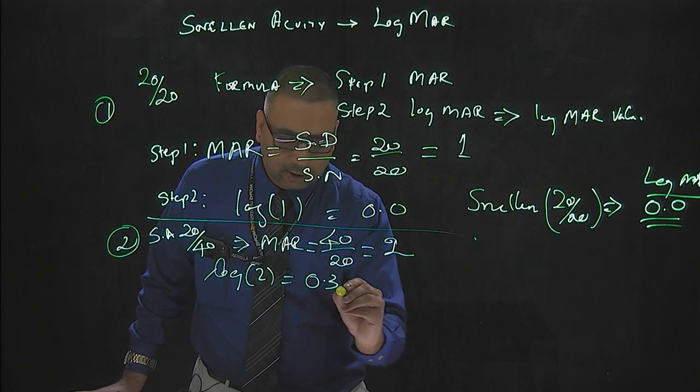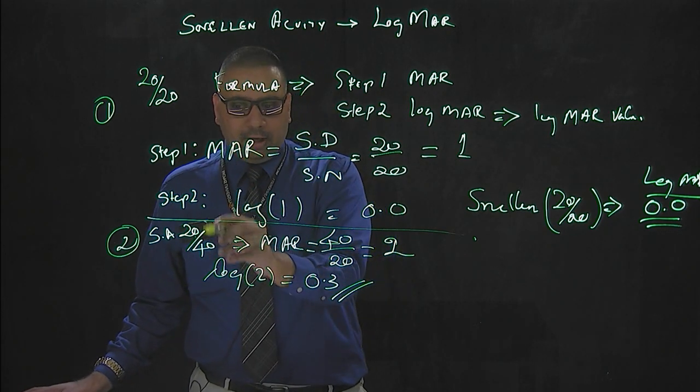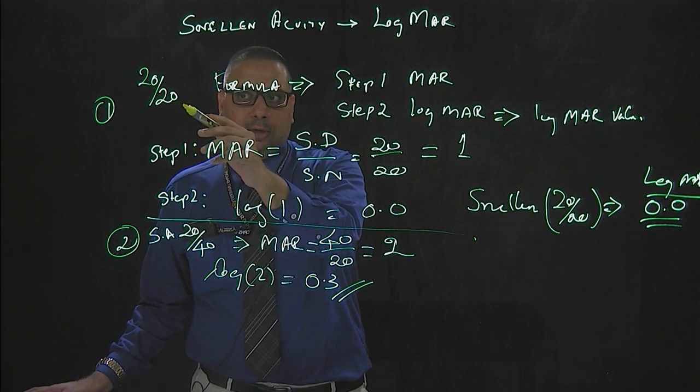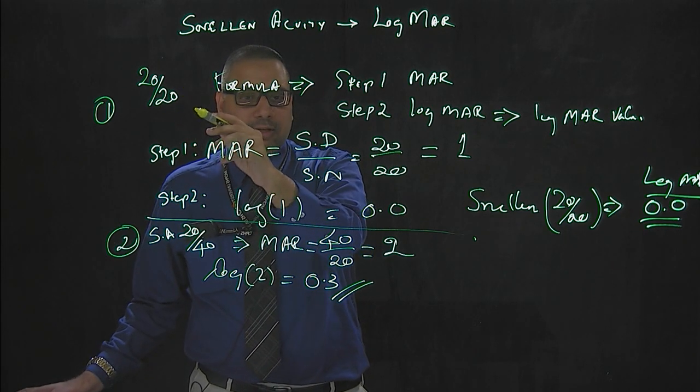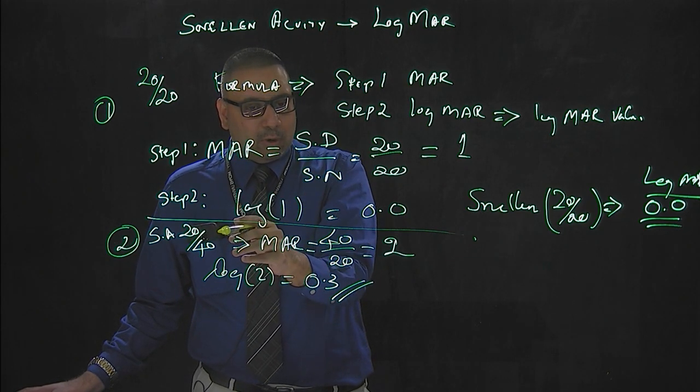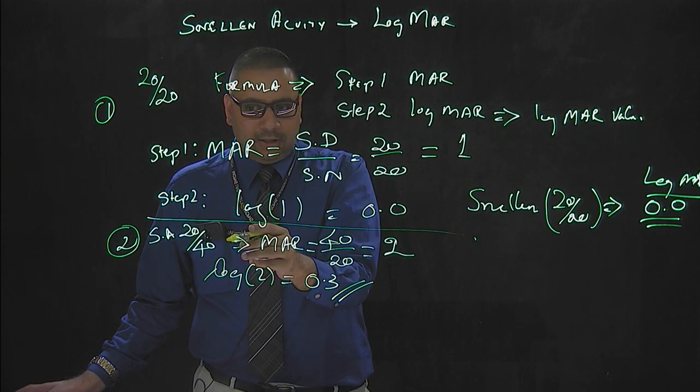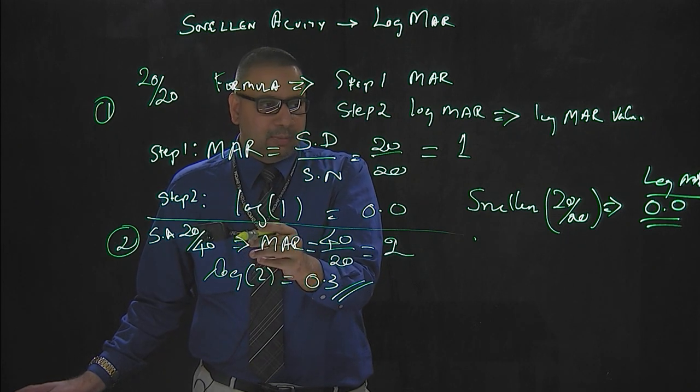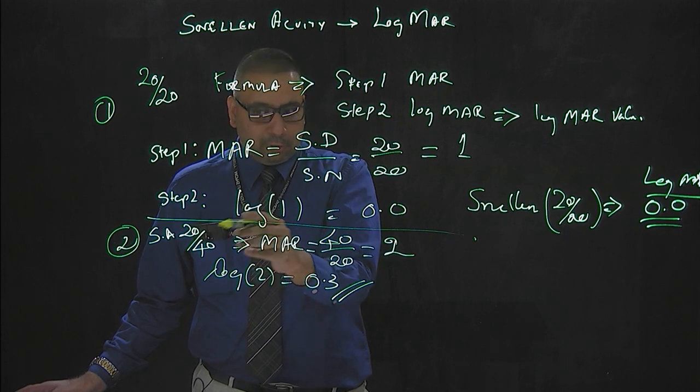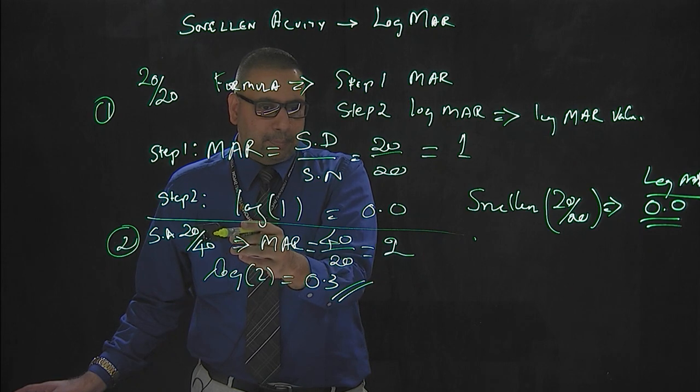So that is your log MAR acuity for 20/40. As you can recall, if it is 20/20, this is a letter size of 20 feet that the person is seeing at 20 feet. If a patient has 20/40 acuity, that means this letter can be seen at 40 feet by a normal person, but your patient is seeing it at 20 feet, which means it is actually a little bad.